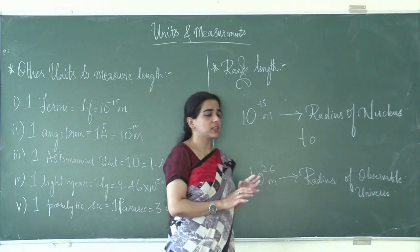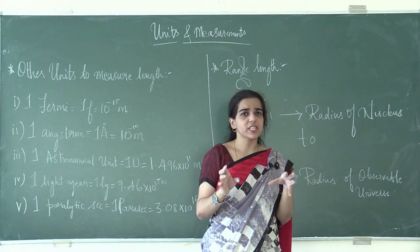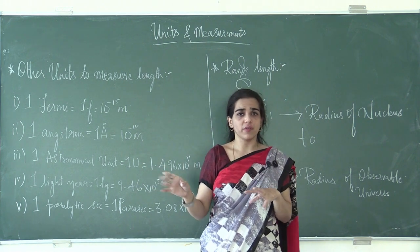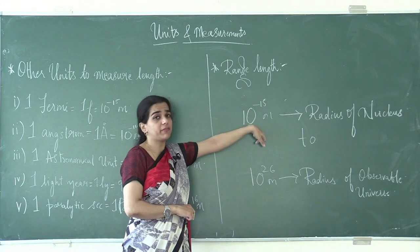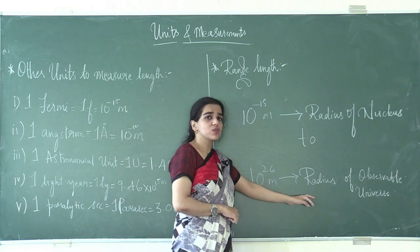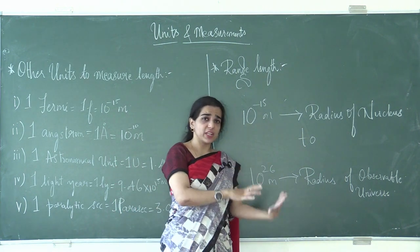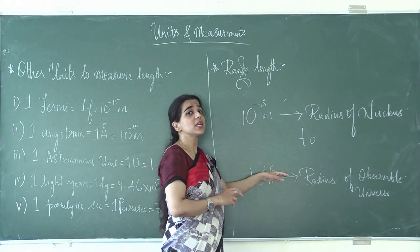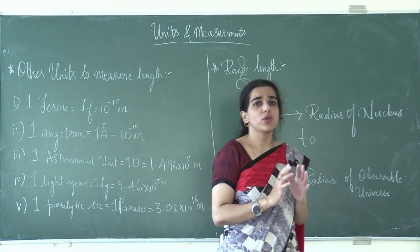The range of length in physics spans from the smallest to the largest measurable scale. The radius of the nucleus of an atom is 10⁻¹⁵ meters, and the radius of the observable universe is 10²⁶ meters. So the range of lengths in physics goes from 10⁻¹⁵ meters up to 10²⁶ meters.